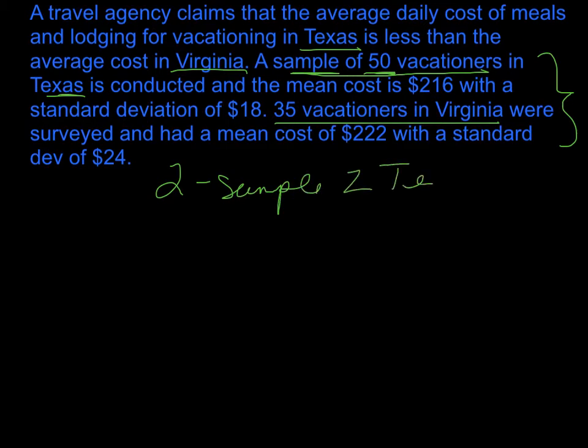Now let's go through the steps. We're going to write our hypothesis statements - our claim in symbols. First, we have our claim in the very first sentence: a travel agency claims that the average cost of meals for vacationing in Texas is less than vacationing in Virginia. We're going to use the population symbol for mean, and we're going to call Texas number one because that's the first one mentioned.